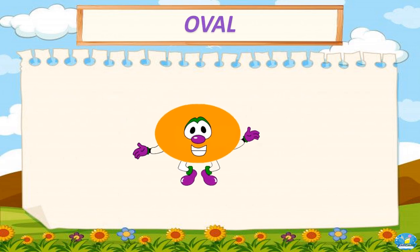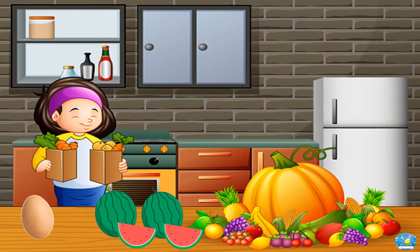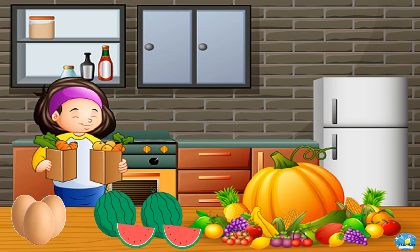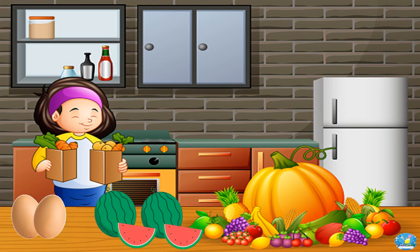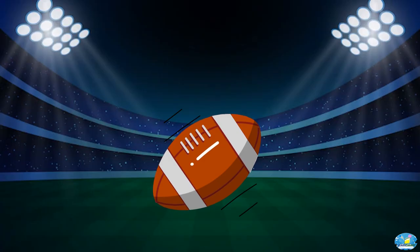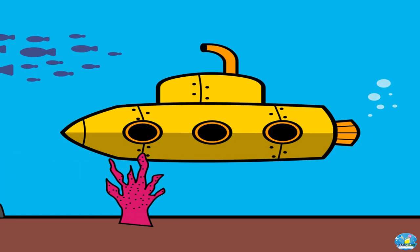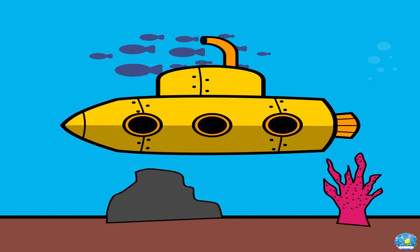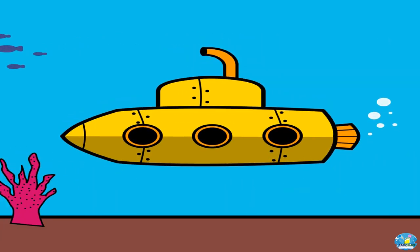Oval. Now let's check out some real-world examples of an oval. Eggs and watermelon. Football. Submarine.